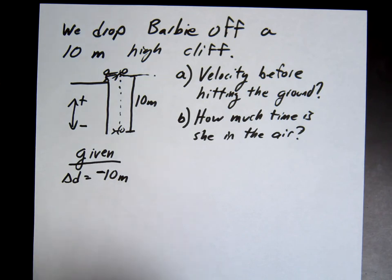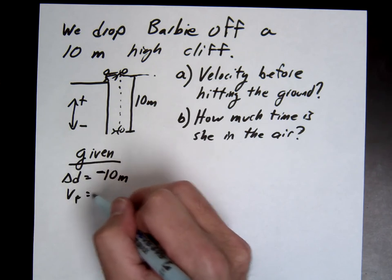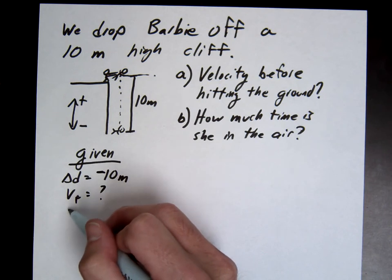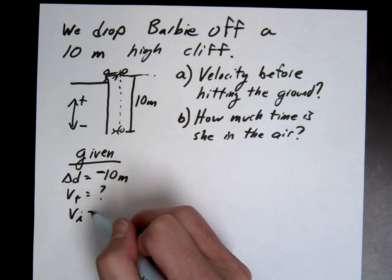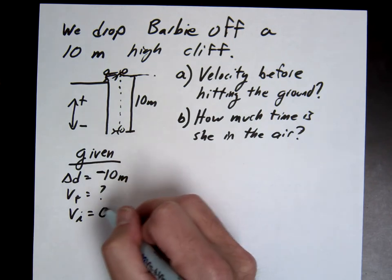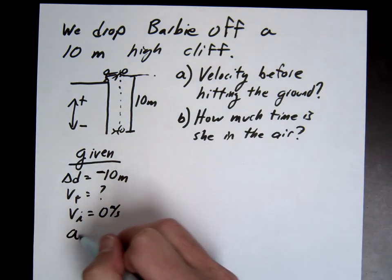Anything else we know? V final, do we know that? Do we know anything else? Don't know final. Initial velocity, what's the initial? We dropped her, right? So initially, she's not moving at all. We dropped her, she starts to accelerate. So the initial is going to be zero. What are we looking to get to? Three things, right? So we need one more. Acceleration. What's the acceleration?